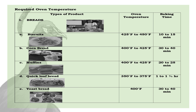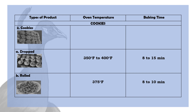For yeast bread: 400 degrees Fahrenheit, baking time 30 to 40 minutes. Let's proceed to cookies. We have different kinds of cookies. Number 1: Drop cookies — 350 to 400 degrees Fahrenheit, baking time 8 to 15 minutes. For rolled cookies: 375 degrees Fahrenheit, baking time 8 to 10 minutes.